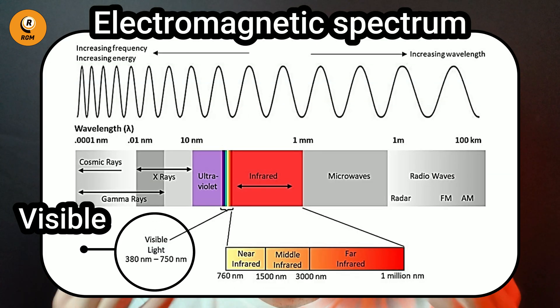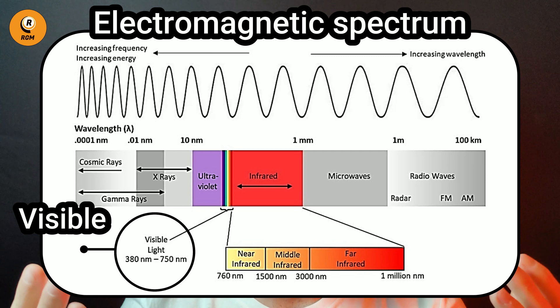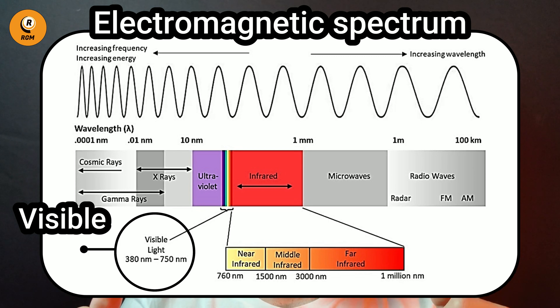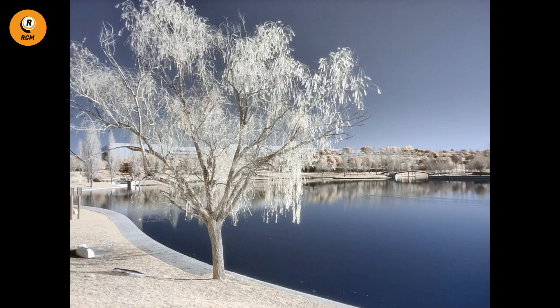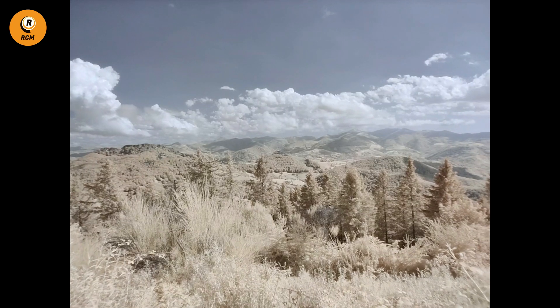The light that we can see with our eyes is called visible light, and we can classify the light or radiation that we can't see into ultraviolet and infrared light. If we are talking about near infrared light or radiation, we can obtain these cool images. But if we are talking about middle or far infrared radiation, we'll get this kind of image.